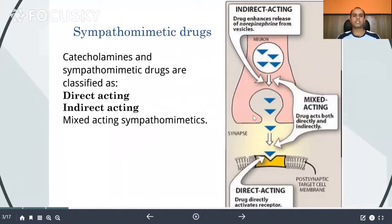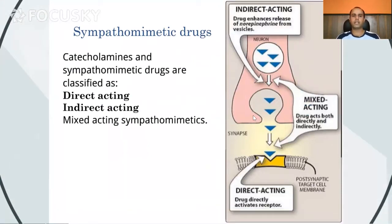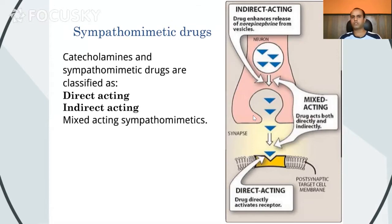The catecholamines and sympathomimetic drugs are classified either as directly acting drugs, indirectly acting drugs, or as mixed acting drugs. The drugs that are directly acting act via different adrenergic receptors. We have already discussed alpha receptors and beta receptors. The drugs that act at the receptor level directly are called directly acting drugs.